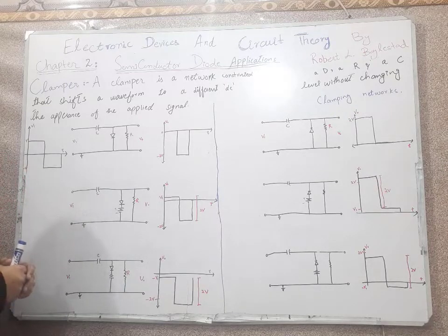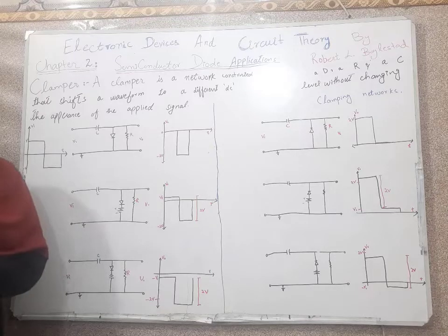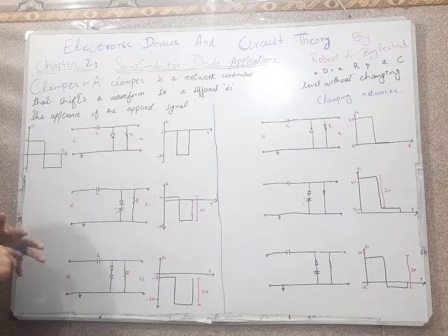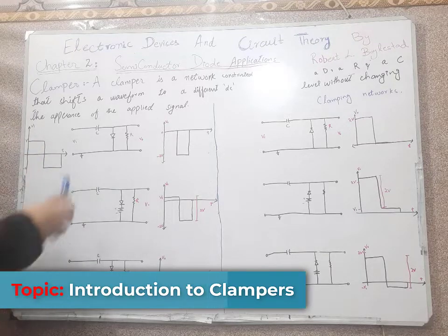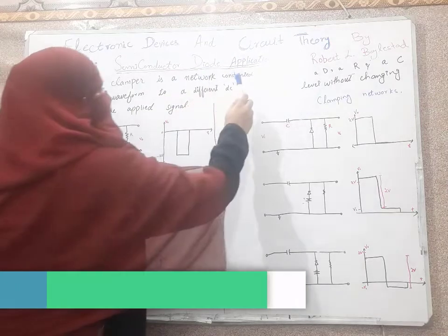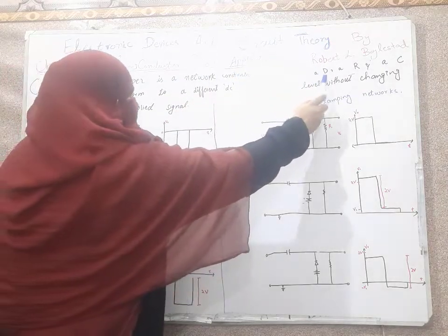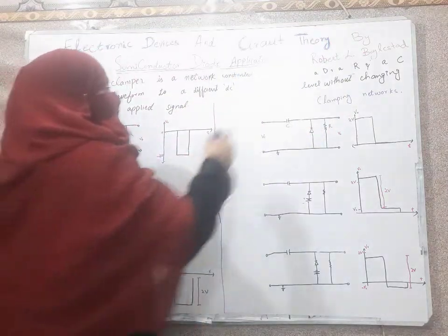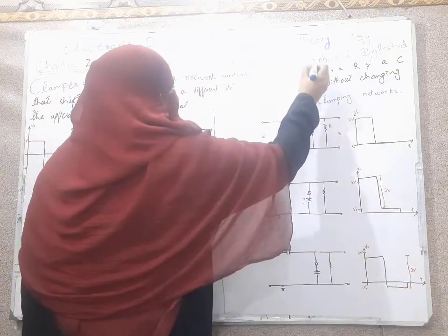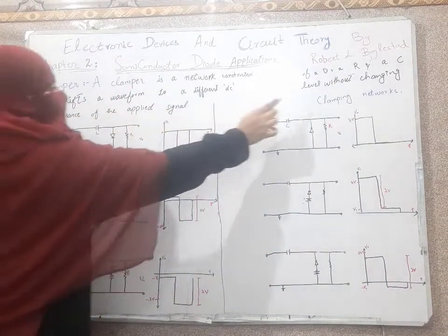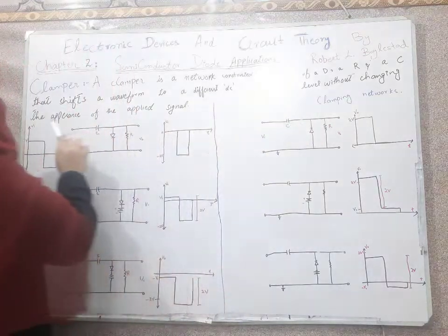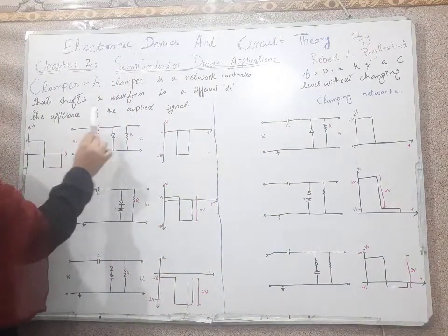In our previous lecture, we discussed about clipper circuits, which are very important. In today's lecture, we will discuss about clampers. A clamper is a network constructed of a diode, a resistor, and a capacitor.